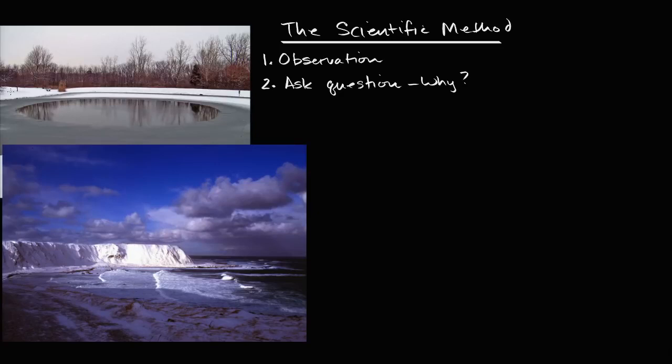You then try to answer that question, and this is a key part of the scientific method. In this third step, you try to create an explanation. But what's key is that it is a testable explanation. This testable explanation is called your hypothesis.